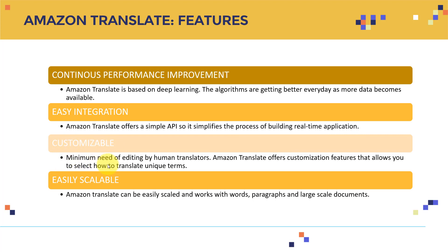Third, customizable — with minimal need for editing by a human translator. Previously, rule-based translation gave word-by-word results that were very robotic, requiring a human translator to refine. But once you hire a human translator, the efficiency of AI is diminished. Amazon Translate offers customization features that let you select how to translate unique terms and minimize relying on human translators as much as possible.